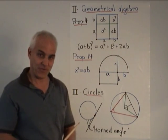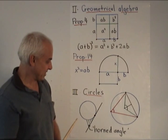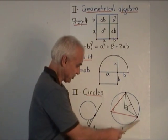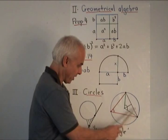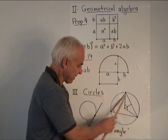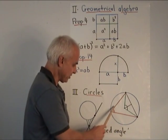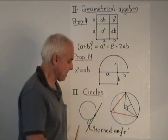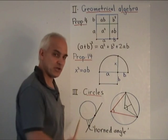Book three deals with circles. There are famous theorems. For example, here is a circle. There's a chord on the circle. And here is the angle subtended by that chord at the center. And here is the angle subtended by that same chord at a point on the circumference.